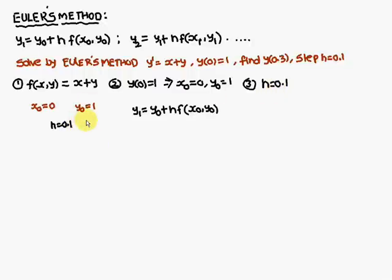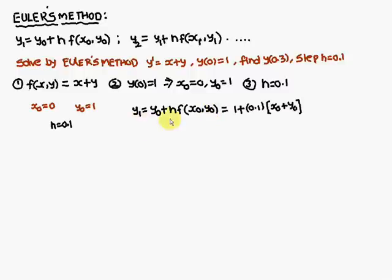We have to proceed with the problem in a systematic model. So, x0 is equal to 0 — write here. y0 is equal to 1 — write here. Step h is equal to 0.1 — write here. And y1 is equal to y0 plus h into f of x0, y0. y0 is already known: y0 is equal to 1.